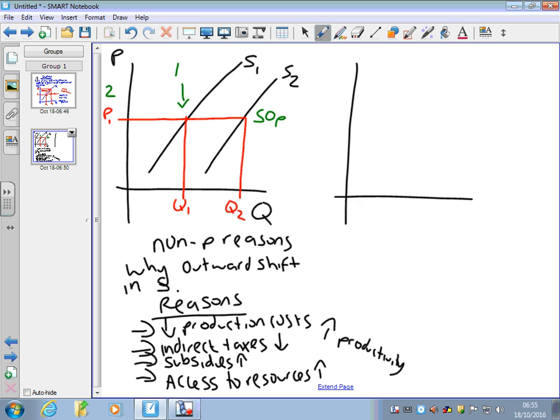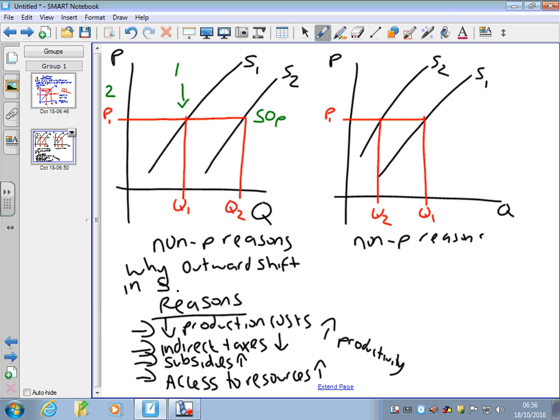Now if supply moves to the left, it's the opposite of what we've just drawn. So S1 to S2, what we've got now is an inward shift in supply. So again, it's non-price reasons why we get inward shift in supply. At P1, we've now got lower supply than what we had before. When you think about it, the reasons for this will be exactly the opposite of what we had for the outward shift. So this time supply will have shifted inwards or fallen due to higher production costs, an increase in taxes, lower subsidies, reduced access to resources, or a lower level of productivity in the business.